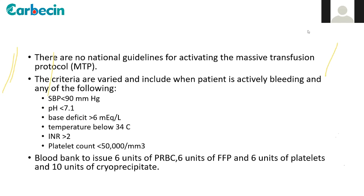Criteria for activating massive transfusion protocol: systolic BP less than 90, pH less than 7.1, base deficit more than 6 mEq/L, temperature below 34°C (hypothermia — very important to prevent), INR more than 2, and platelet count less than 50,000/mm³. While waiting for the coagulation profile, immediately perform the clot observation test. Blood bank should issue 6 units of PRBC, 6 units of FFP, 6 units of platelets, and 10 units of cryoprecipitate in case of massive transfusion.